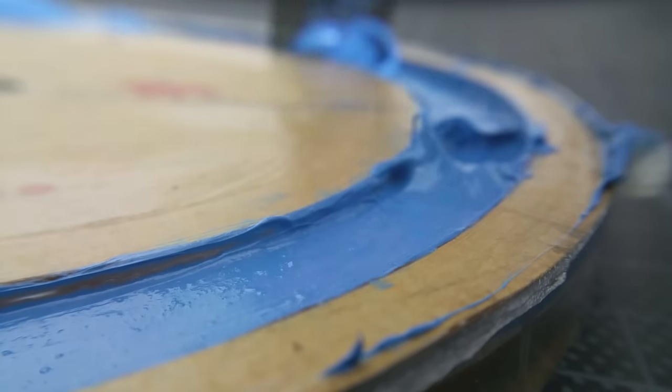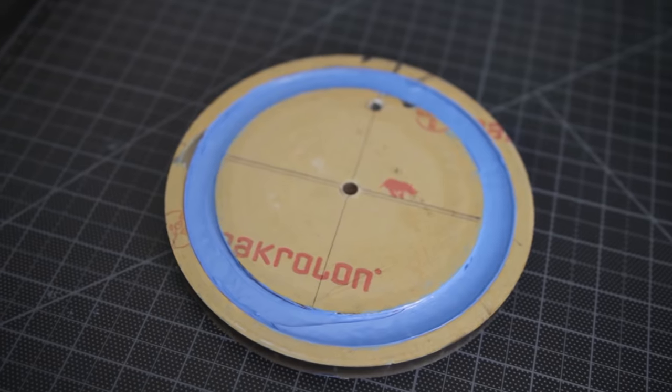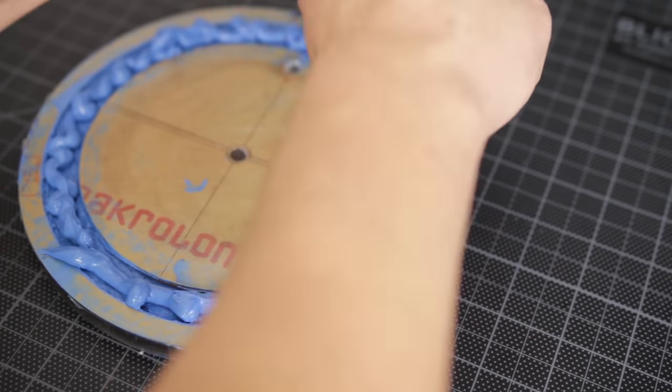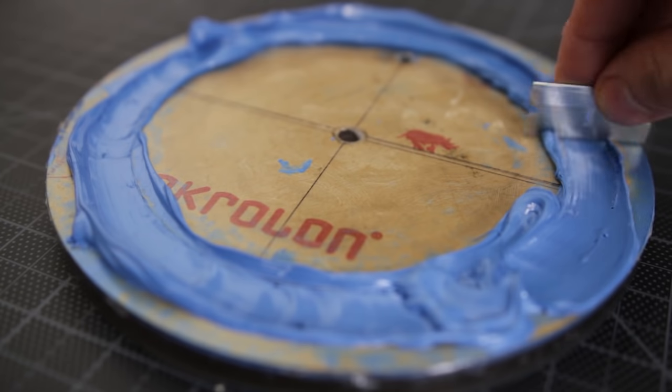I then use the laser cut piece to set the height of the first layer of silicone. I apply my second layer and then smooth the top with a razor blade.